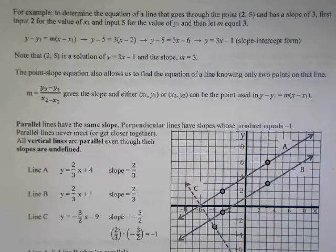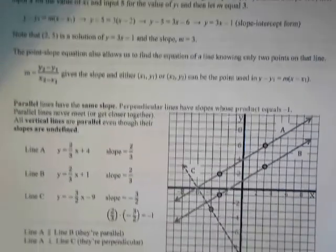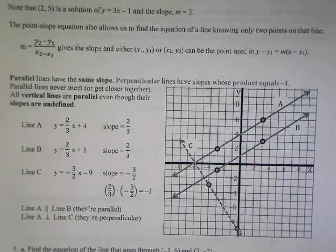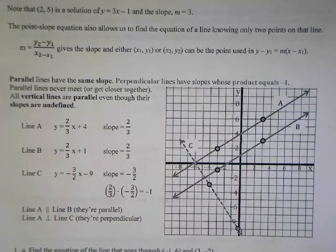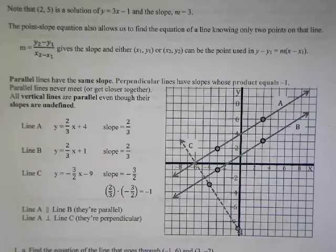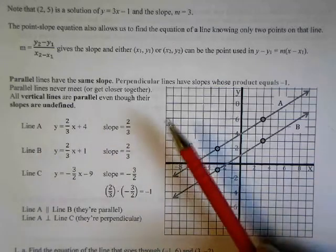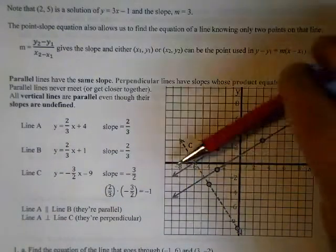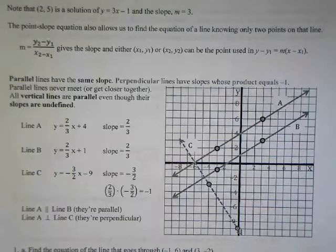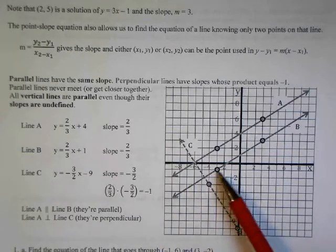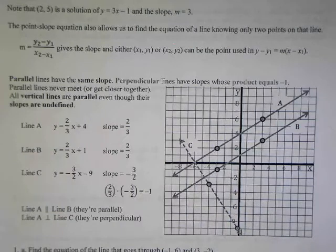That's the first part of Section 5. The rest of it really deals with parallel and perpendicular. Basically, if you have any two lines on a graph, there are three possibilities. They could be parallel — meaning they don't get any closer or farther apart. They could be perpendicular — meaning they cross at right angles to each other. The third possibility is that they intersect but are not perpendicular, so the angles between the two lines are not right angles or 90 degrees.